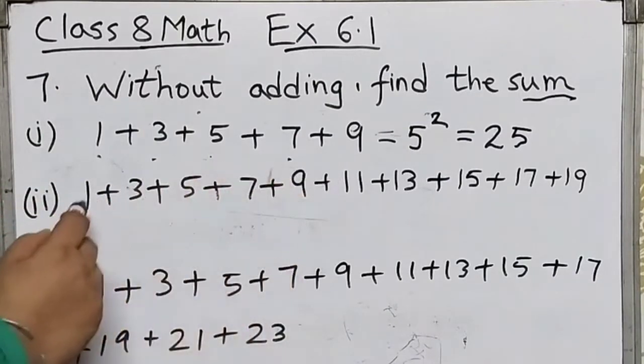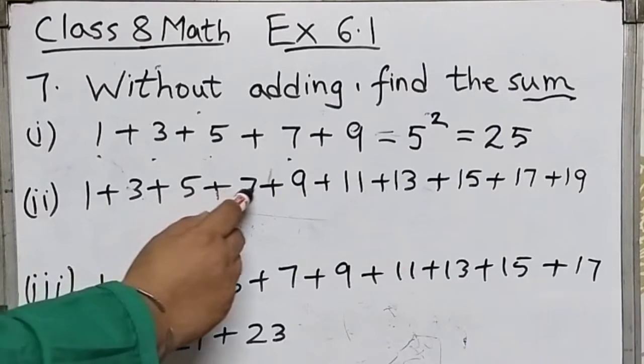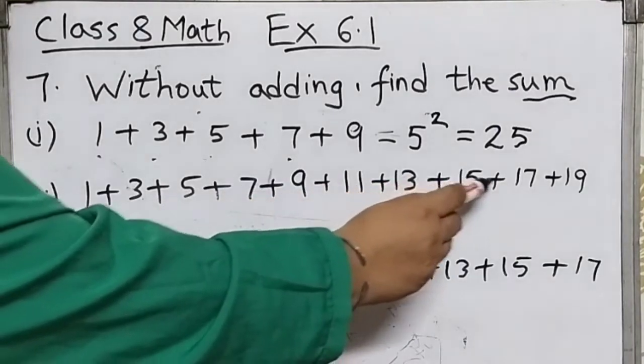All odd numbers. Count how many are there: 1, 2, 3, 4, 5, 6, 7, 8, 9, 10.